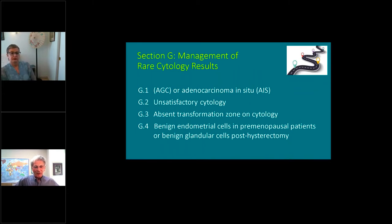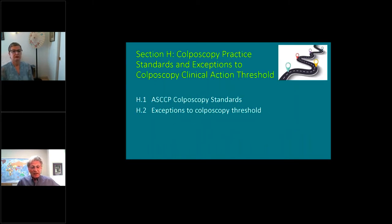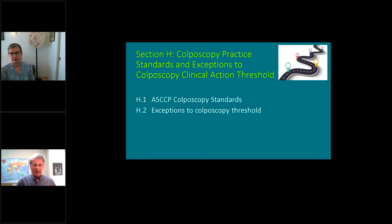Next is management of rare cytology results — the ones we see infrequently: AGC, unsatisfactory cytology, absent transformation zone on cytology, and benign endometrial cells in both premenopausal and postmenopausal patients. Next is a section on the ASCCP colposcopy standards, finalized a couple of years ago, which set a floor and ceiling on how to provide high-quality colposcopy services — well worth reading if you haven't already.